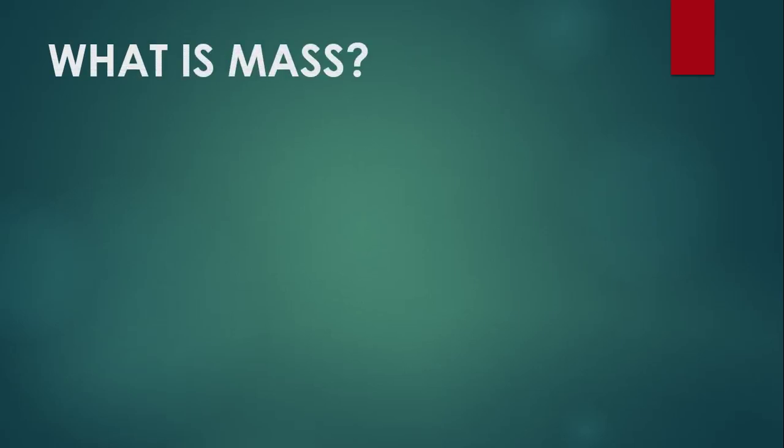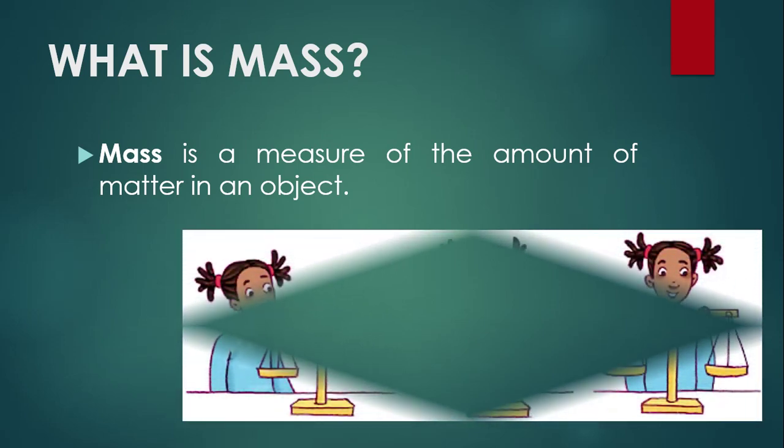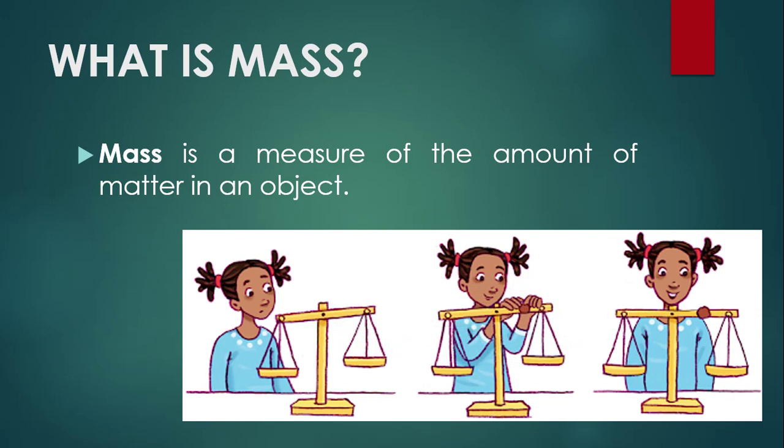First of all, let's think about what mass means. Mass is a measure of the amount of matter in an object. Therefore, if we are going to take an object, the quantity of matter in that object is what we call mass.